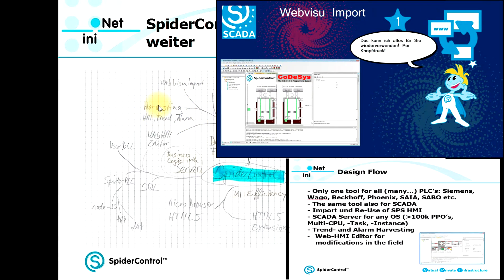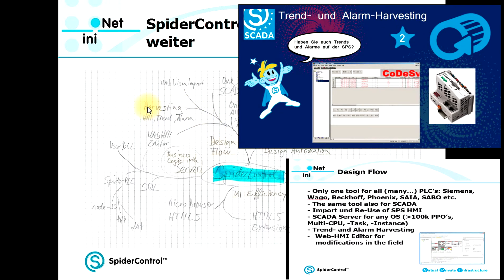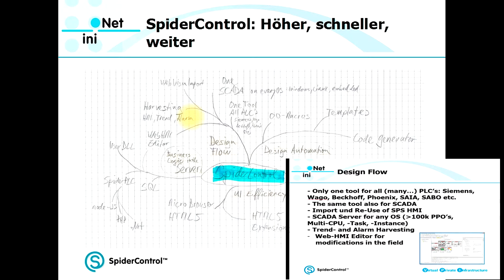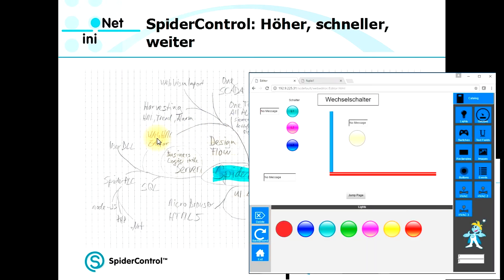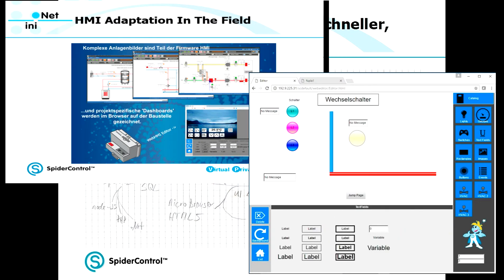Another aspect is harvesting. I can not only import the HMI elements, but I can also import alarm and trend configurations and add them mostly automatically to my SCADA alarm and trend configuration. Another aspect is our web HMI editor. We have integrated a simple browser-based web HMI editor which allows us to make simple modifications in a well-defined area.